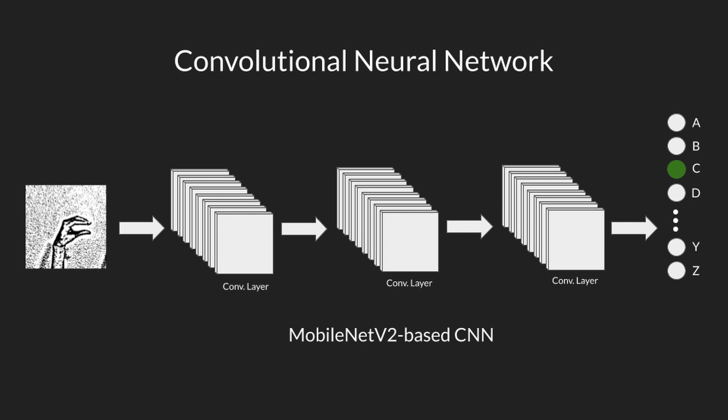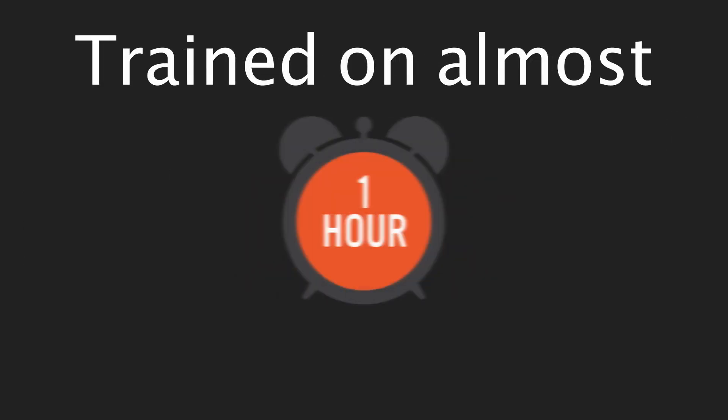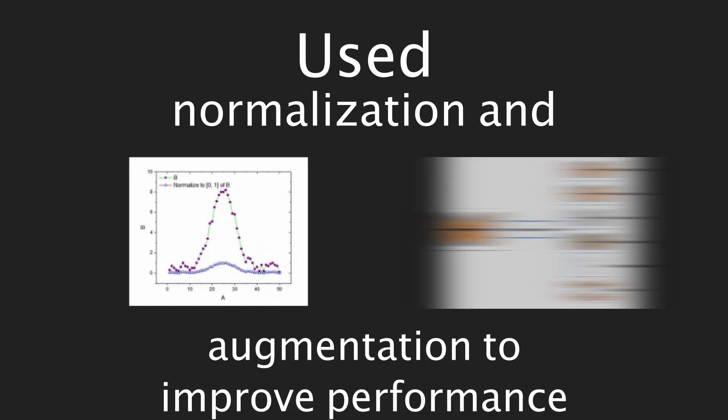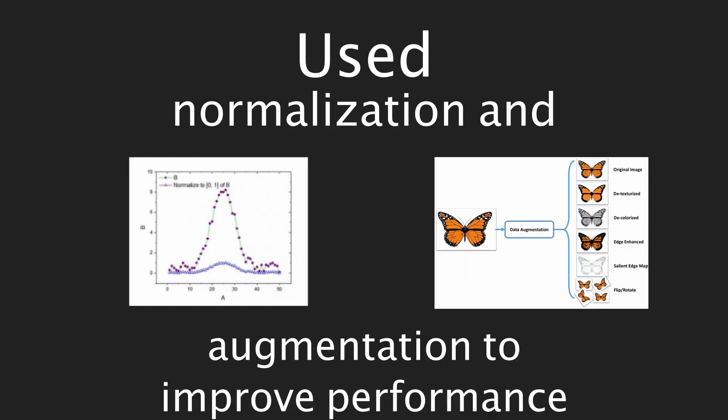The CNN was built using transfer learning from a pre-trained ImageNet model known as MobileNet V2. We trained this convolutional neural network on almost one hour of video samples of us performing sign language alphabets into a camera, utilizing techniques such as normalization and augmentation to improve the network's performance. This allowed the CNN to learn how to label video frames with the correct letters.